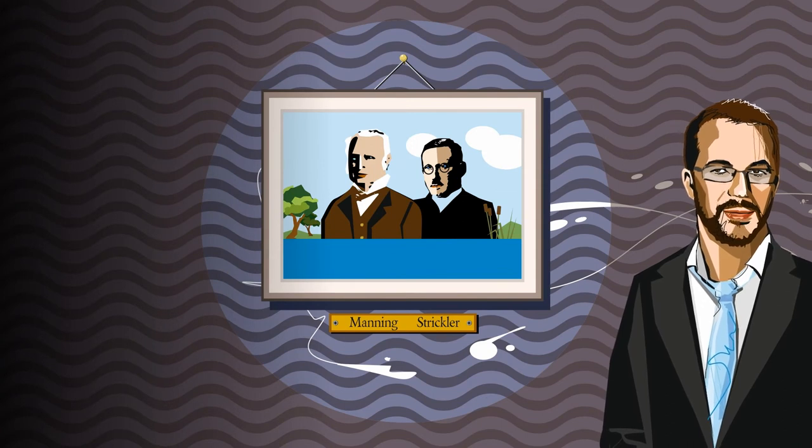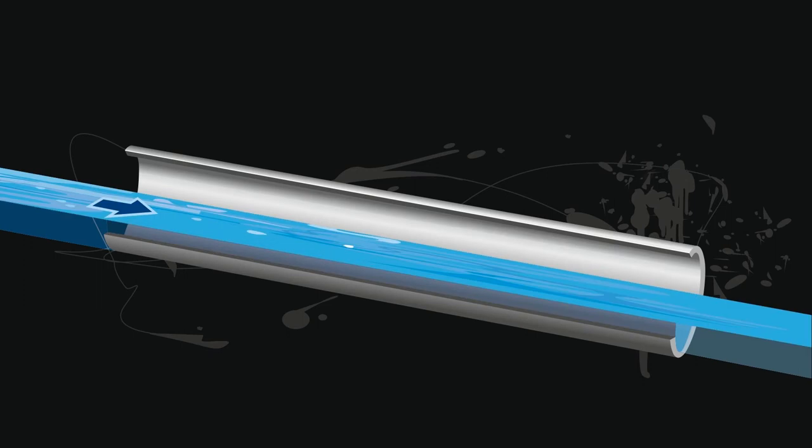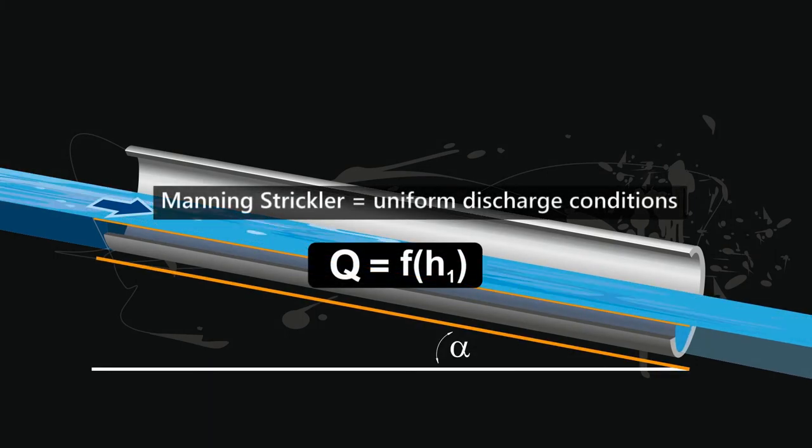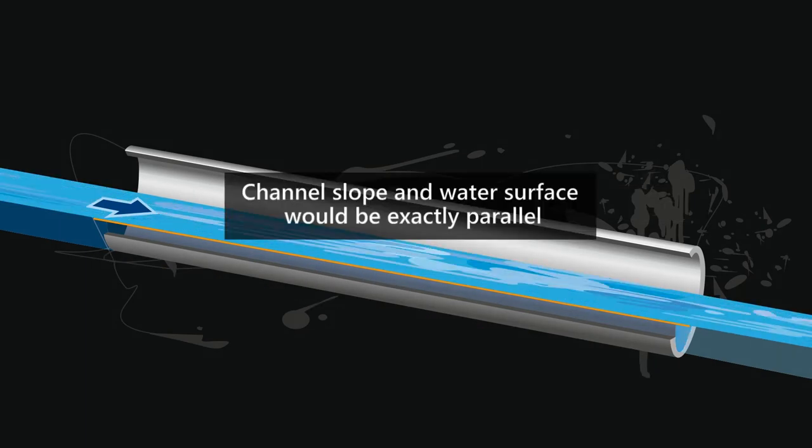Hydraulic calculations according to Manning Strickler are widely known. This calculation method assumes uniform discharge conditions, so channel slope and water surface can be exactly parallel.